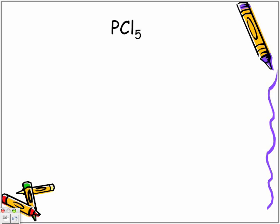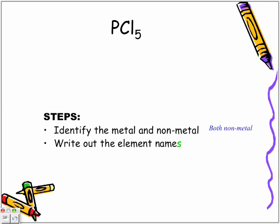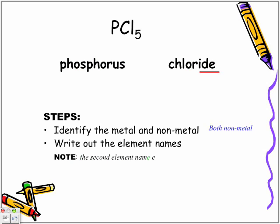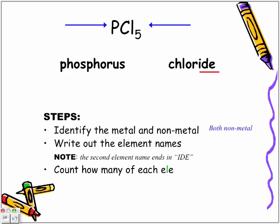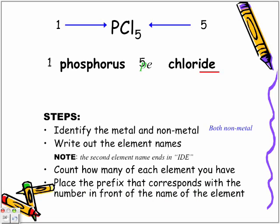So we're going to identify metal, non-metal, and we don't have a metal, we have both our non-metals. We're going to write out the element names. P is phosphorus, Cl is chloride, so phosphorus chloride. How many of each one do we have? We have one phosphorus, we have five chloride. So using the prefixes, because phosphorus is already just a one, we just keep phosphorus, and instead of five chloride, we use the word pentachloride.